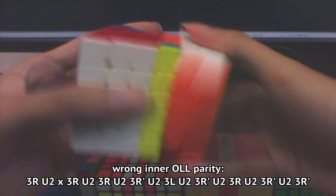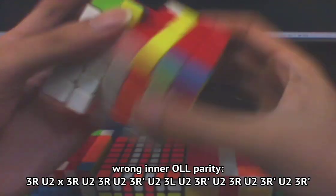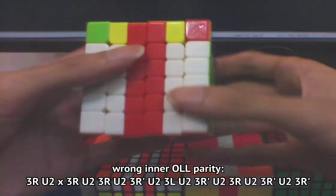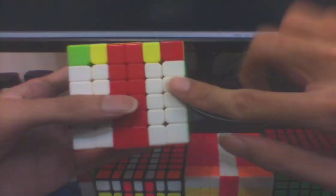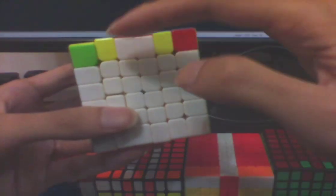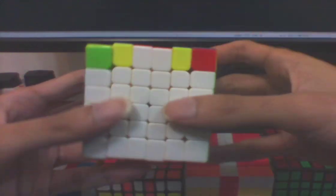So R U2... The left and right layers don't match up with the middle layers at the end of the algorithm, and if you just do an M' here, you'll destroy some of the paired edges.